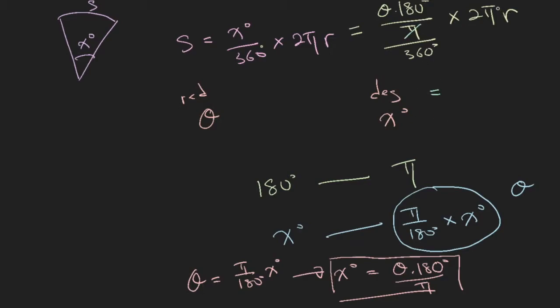So pi cancels with this pi, 180 divided by 360, you will have a 2 in the denominator. So you have theta over 2 times 2 R. And if you cancel the two, you will have R times theta, or theta times R.